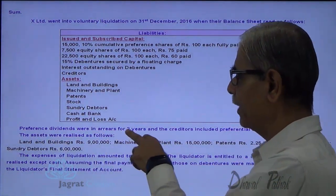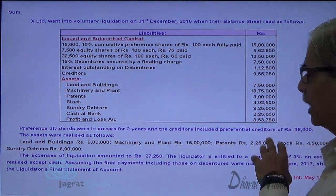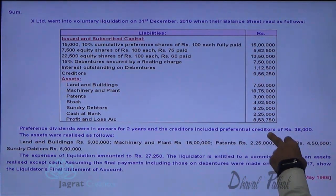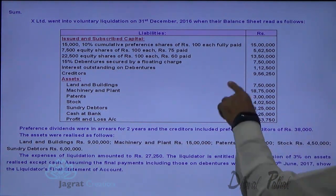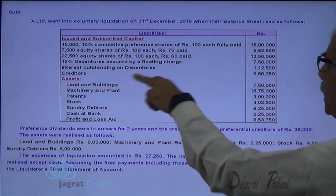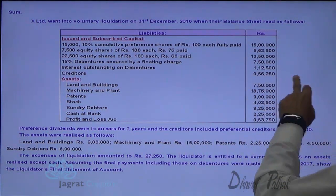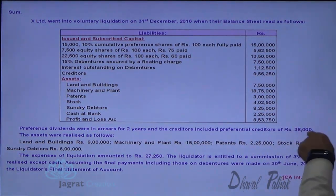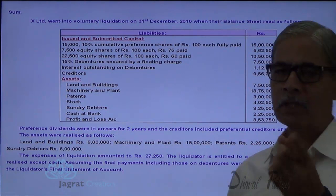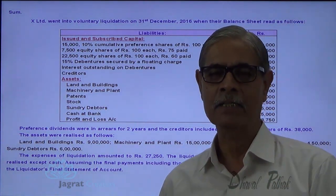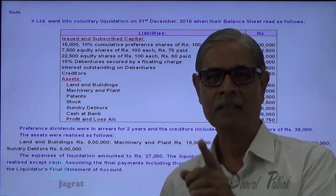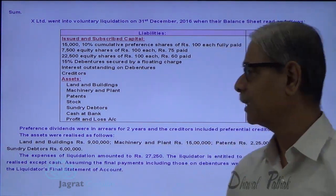Preference share dividend is in arrears for two years. The total creditors of 9,56,250 include 38,000 as preferential creditors; the remaining are unsecured creditors.